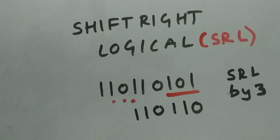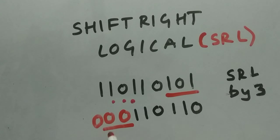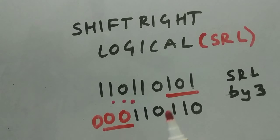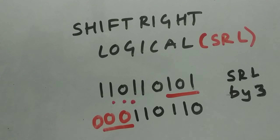After shift right logical, the first three bits are thrown away and the last three bits are empty. Since it is shift right logical by three, we fill those three empty positions with zeros. As a quick rule: for right shift use MSB, and for left shift use LSB.